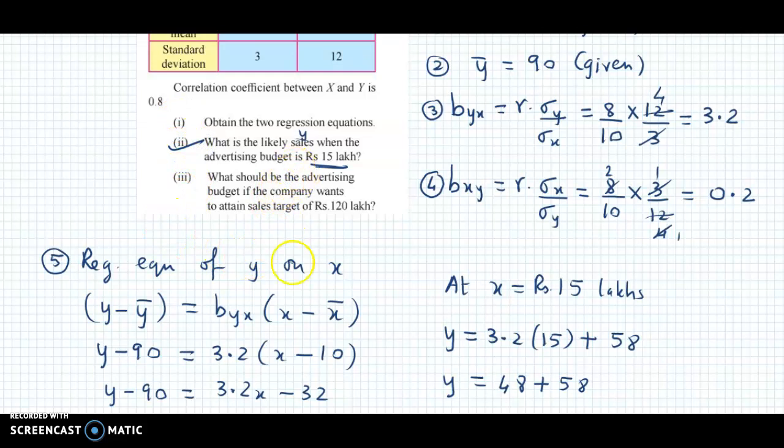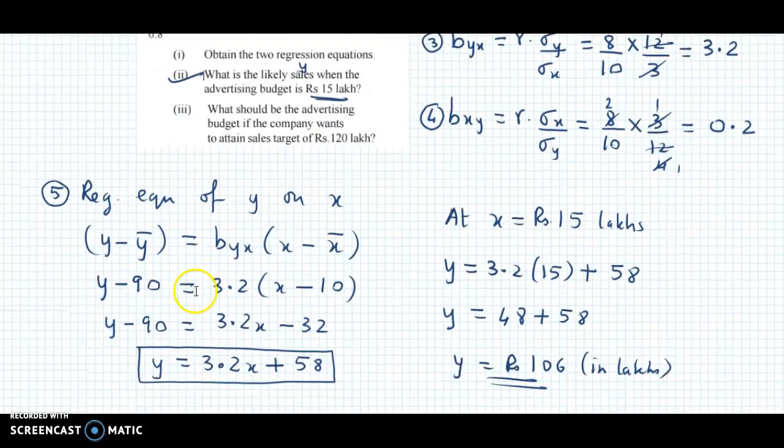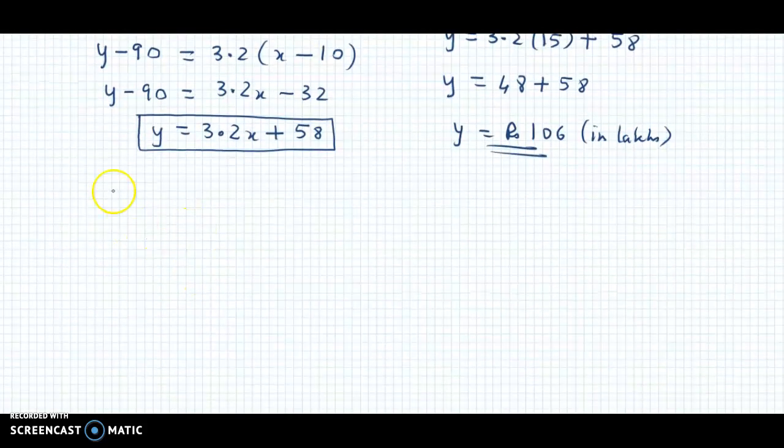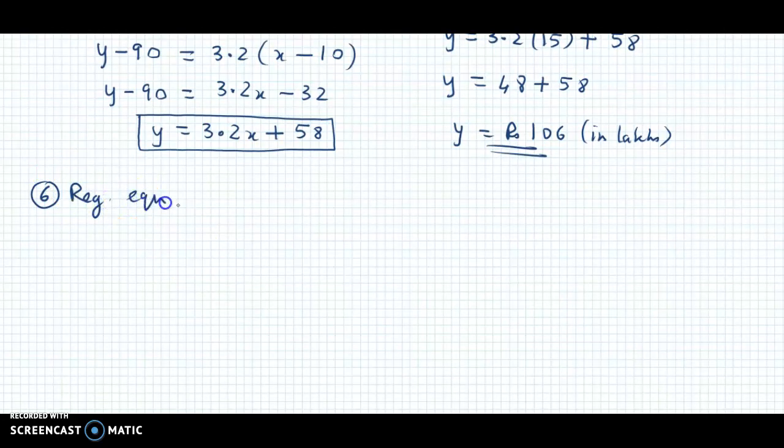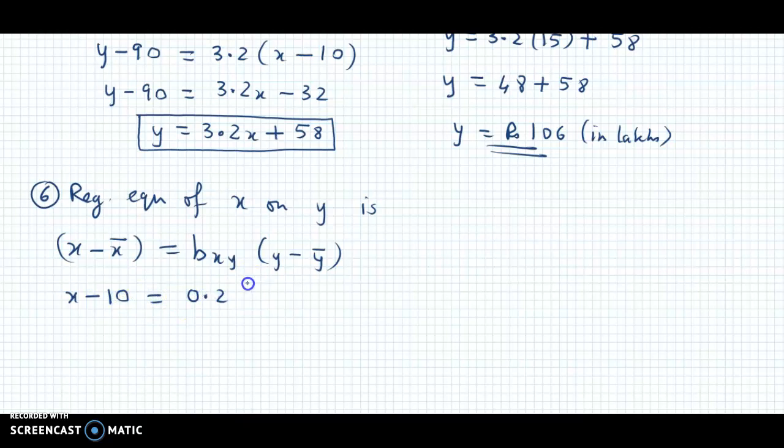Next we need the x on y equation. So we go for regression equation of x on y. Step number six: regression equation of x on y is (x - x̄) = bxy(y - ȳ). This becomes x - x̄, x̄ is 10, equals bxy which is 0.2.